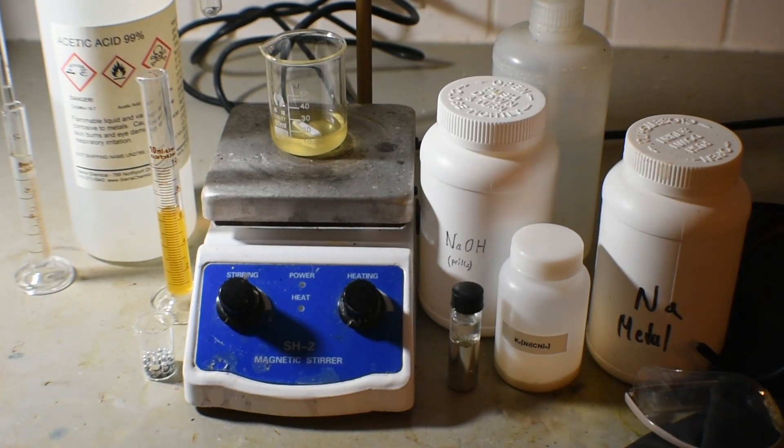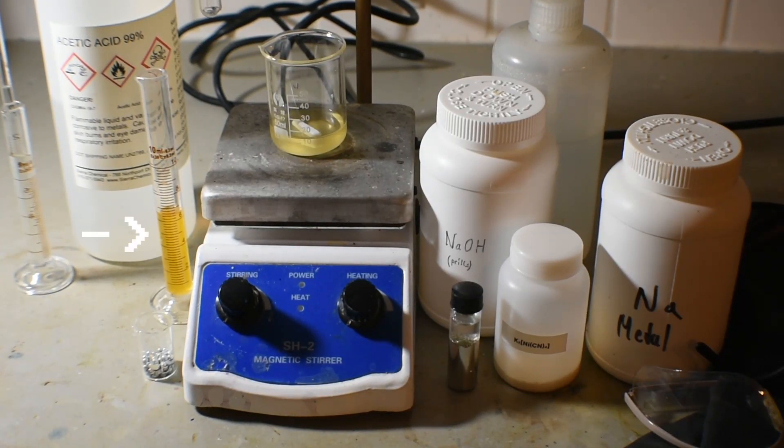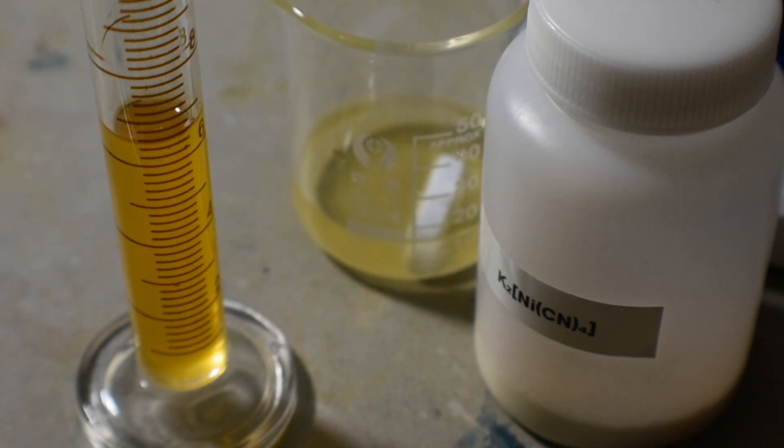First, let's look at what we're going to be using today. You can see a yellow liquid there. I'll start by crushing your hopes. This isn't urine. Instead, it's a solution of potassium tetracyanonicolate, which I made by reacting nickel-2-cyanide with a solution of potassium cyanide to form this nice, yellow-colored solution.